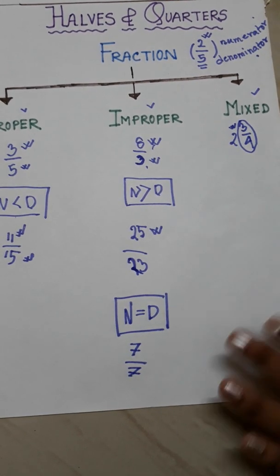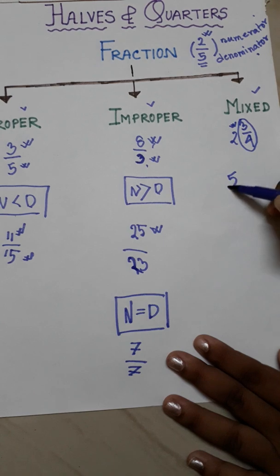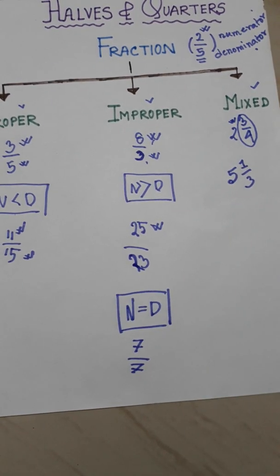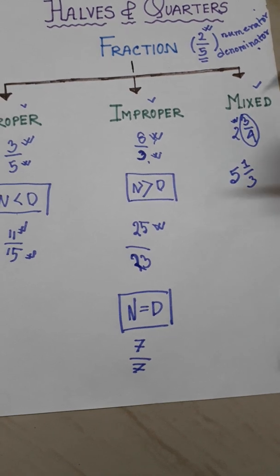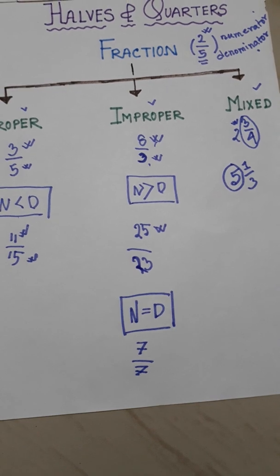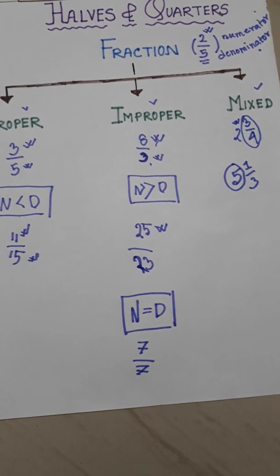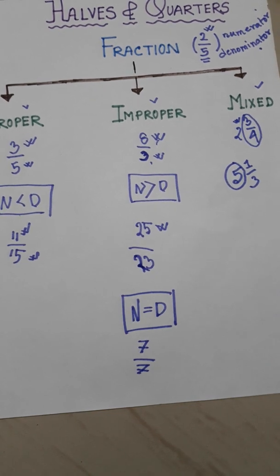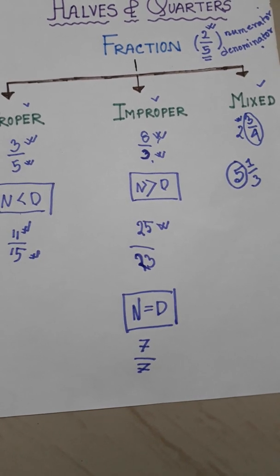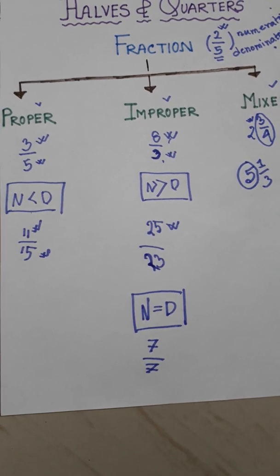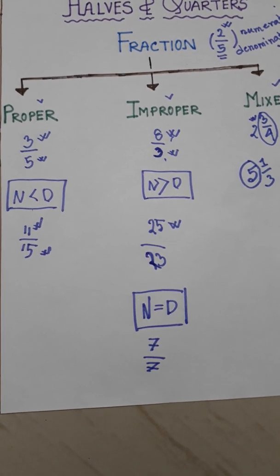Another example: 5 whole 1 by 3 — where 5 is a whole number and 1 by 3 is a proper fraction. So the definition of mixed fraction: a mixed fraction is a fraction where there is a whole number and a proper fraction.